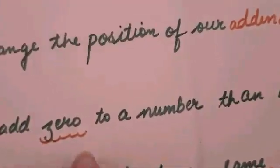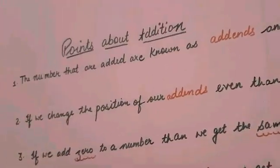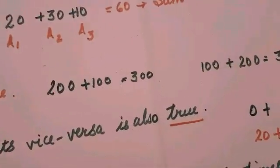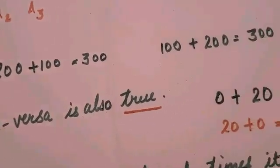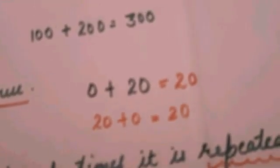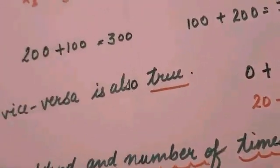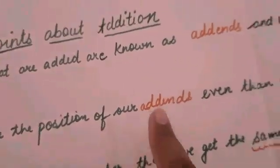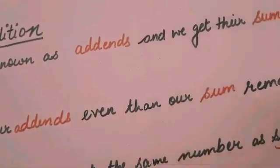Point number three: if we add 0 to a number, then we get the same number as the sum, and its vice versa is also true. For example, 0 plus 20 equals 20, and 20 plus 0 is also 20. This is because we already studied in point number two that if we change the position of addends, the sum remains the same.